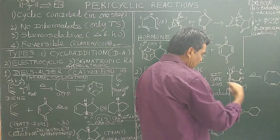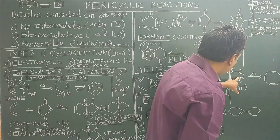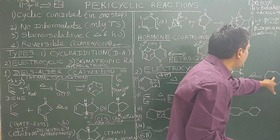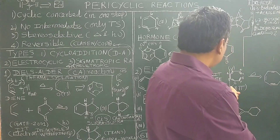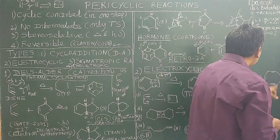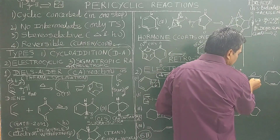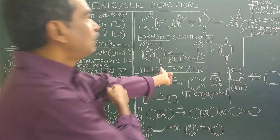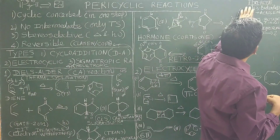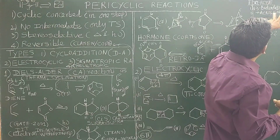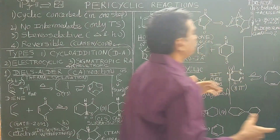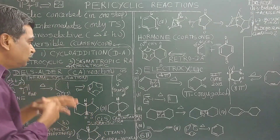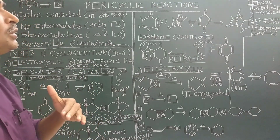Octa-tetraene on heating undergoes electrocyclic reaction to give the cyclic product — this involves the reorganization of sigma and pi bonds.